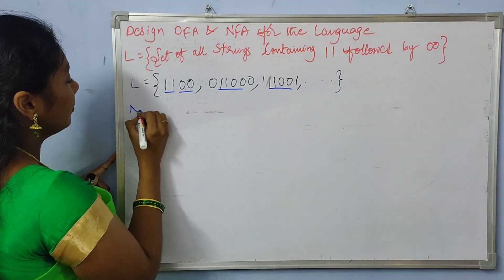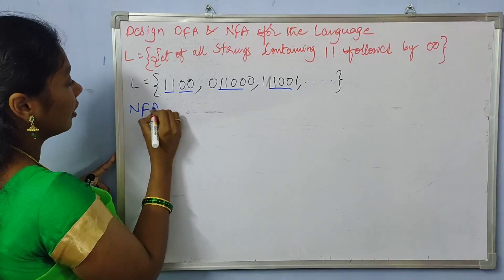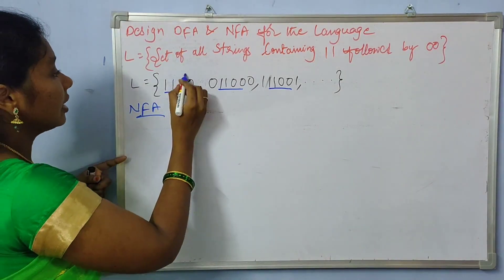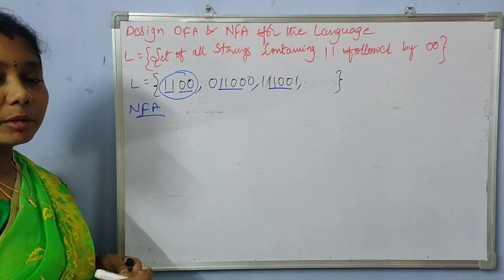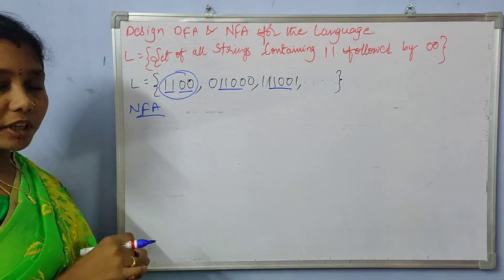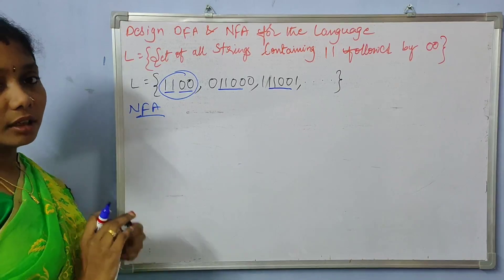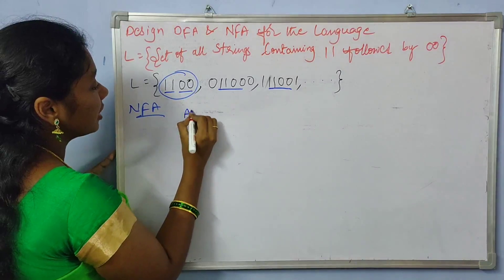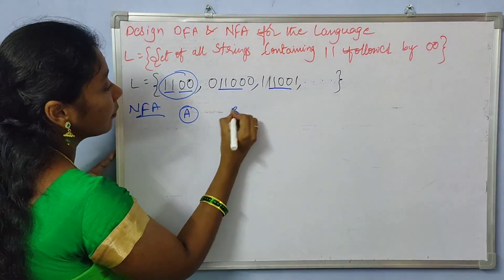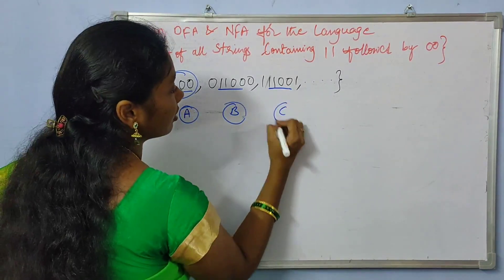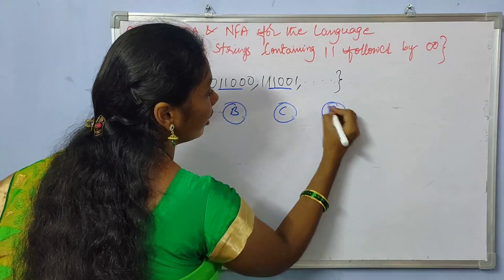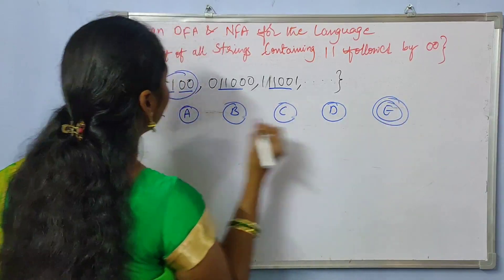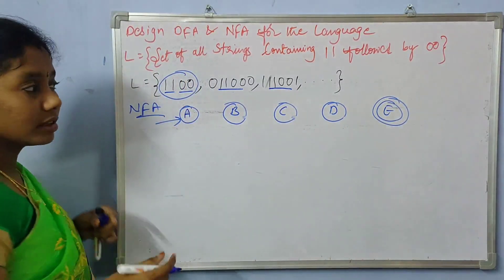First let us construct the NFA. The minimal string in the language is double one double zero, and the length of the minimal string is four, so we can have five states for constructing the NFA. The five states are A, B, C, D, and E. This is the final state and this is the initial state.